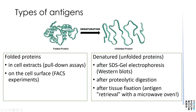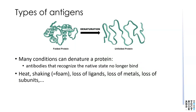Folded proteins are the ones you would want to recognize in cell extracts in pull-down assays or on the cell surface in FACS experiments. Whereas denatured or unfolded proteins are the forms that you would want to detect after SDS gel electrophoresis — in other words, in Western blots — or after proteolytic digestion or after tissue fixation. Many conditions can denature a protein, and under these conditions antibodies that recognize the native state would no longer bind. If the protein is treated with heat, heavy shaking causing foaming, or if ligands, metal ions, or subunits are lost, the protein pretty easily converts into the unfolded form.